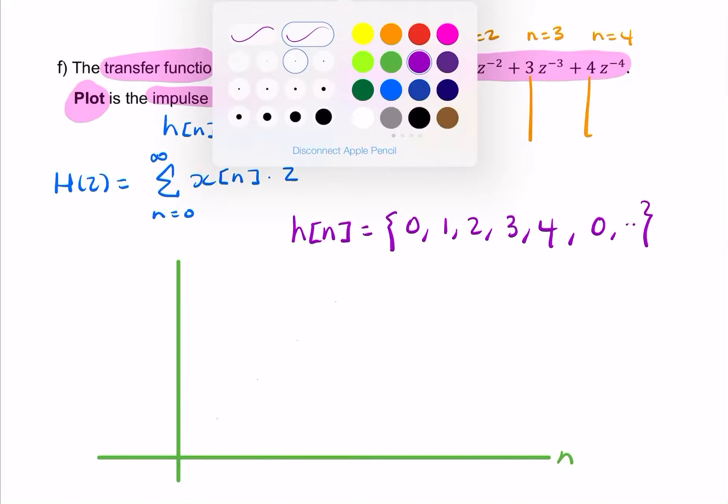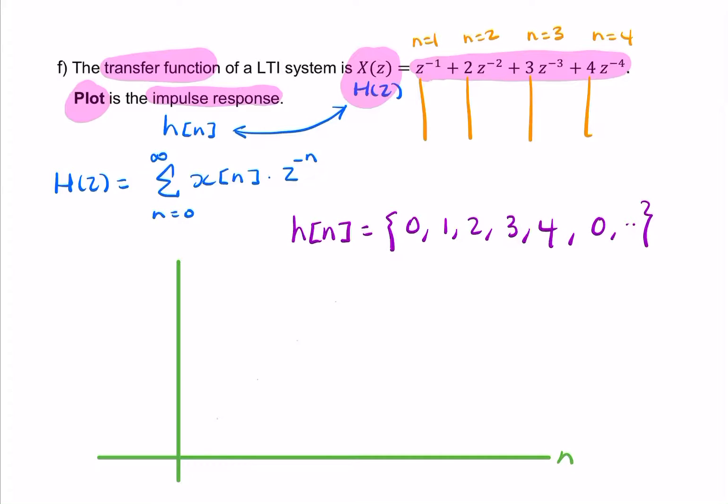So we start with 0. So we have a big 0 at 0, n equals 0. And then we have, obviously, 0s for negative n as well.